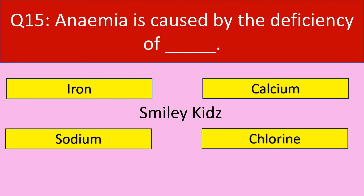Question number 15. Anemia is caused by the deficiency of which mineral? Options are: iron, calcium, sodium, chlorine. Your time starts now.